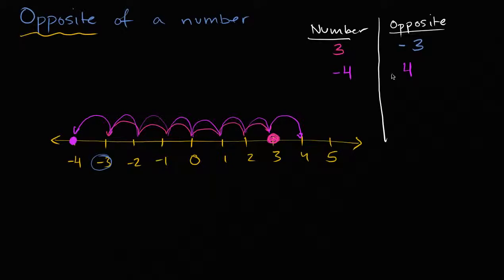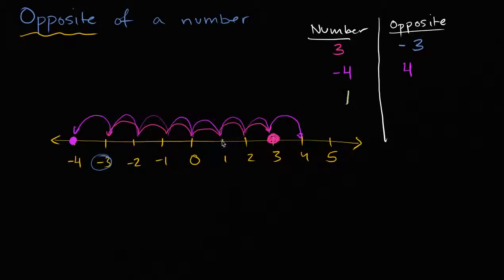One way to think about it: it's going to have the same absolute value, but have a different sign. Or another way to think about it: if a number is three to the right of zero, its opposite is three to the left of zero; if it's four to the left of zero, its opposite is four to the right of zero. So let's do one last one — what is the opposite of one? Well, one is one to the right of zero, so its opposite is one to the left of zero, or negative one. One is positive, so its opposite changes the sign — instead of being positive, it's going to be negative one.